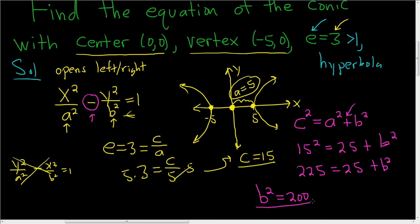So we have b². We have a. So we have that a² is 25. And now all we have to do is plug our numbers into our equation and we are done. So the final answer will be x²/25 - y²/200 = 1.